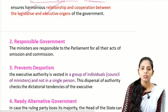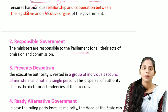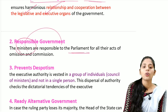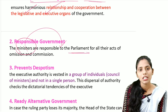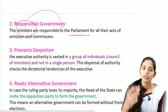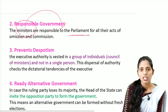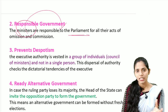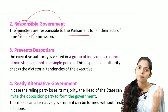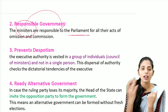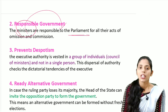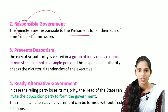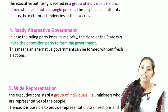The next merit is responsible government — the ministers are responsible to the parliament regarding their acts, actions, omissions, and commissions. The next merit is that it prevents despotism. In the parliamentary system we have a nominal head — the president — and a real head — the prime minister — so power is not fully vested in a single person, unlike the presidential system where entire power is vested with the president. This prevents despotism.